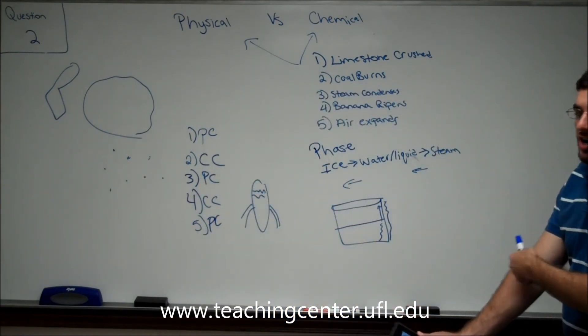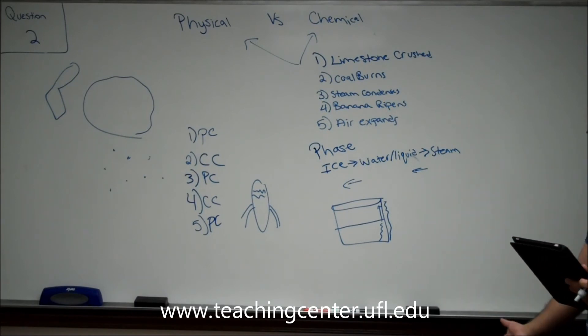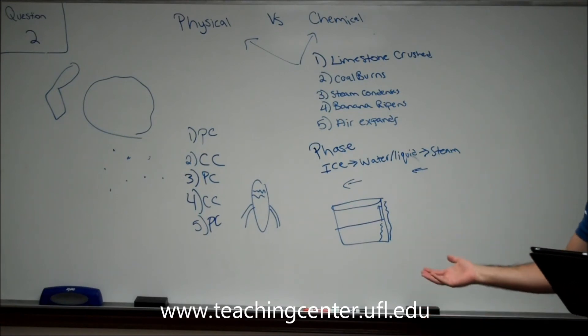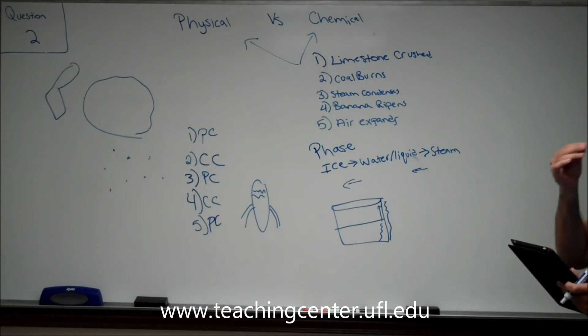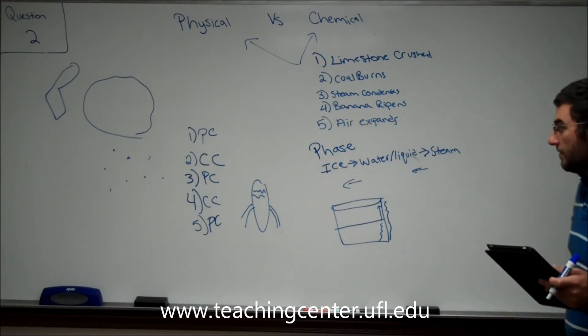So the answer: limestone being crushed, you are going from a larger to a smaller, but it does not change. Number two, coal burns. You can never go back once you heat the coal and turn it into energy, so it is a chemical change. Number three, steam condenses. Just a phase change. Remember, phase change is a physical change.